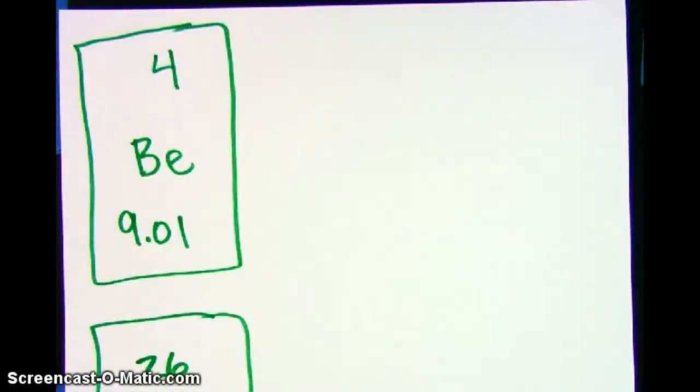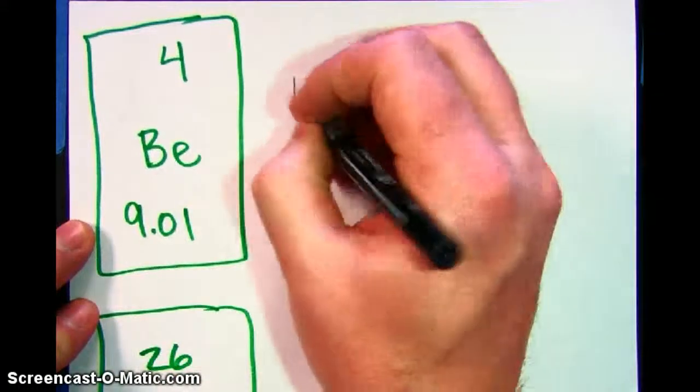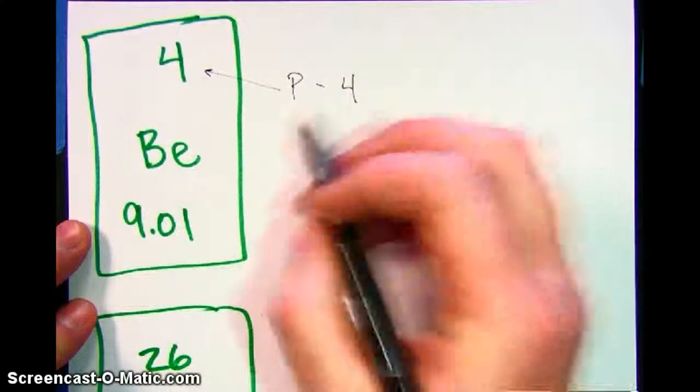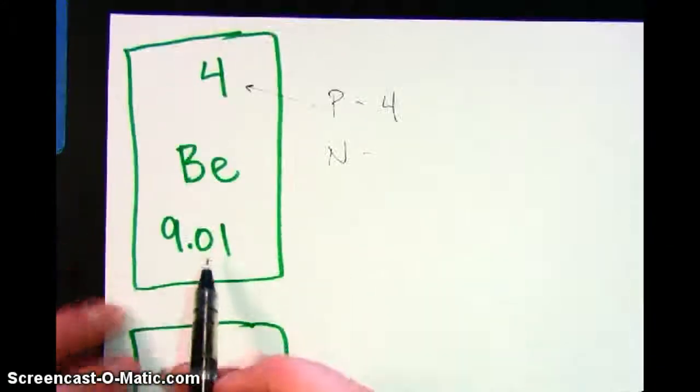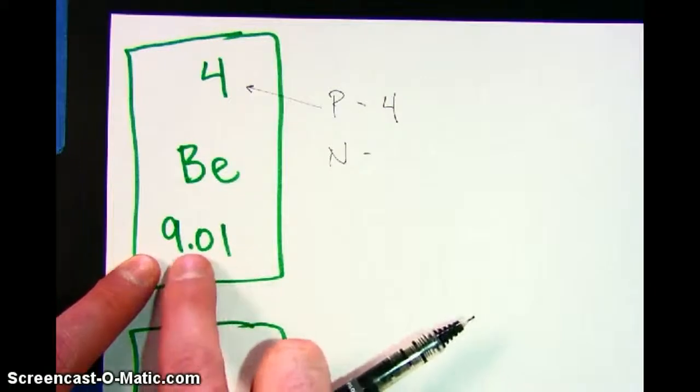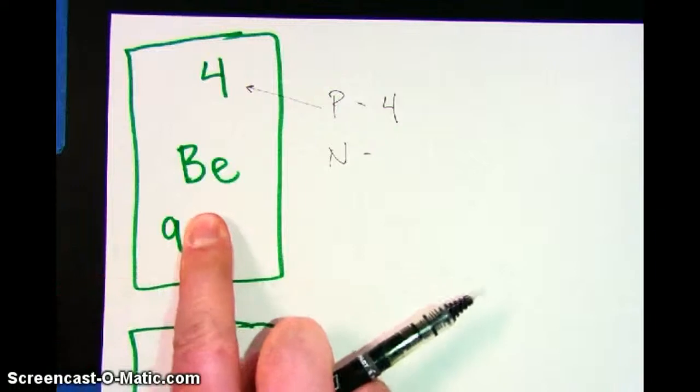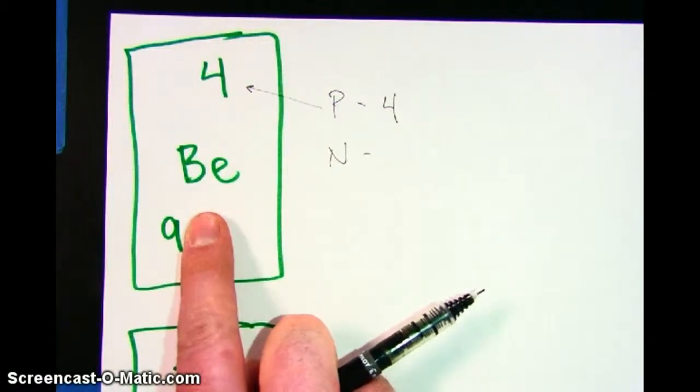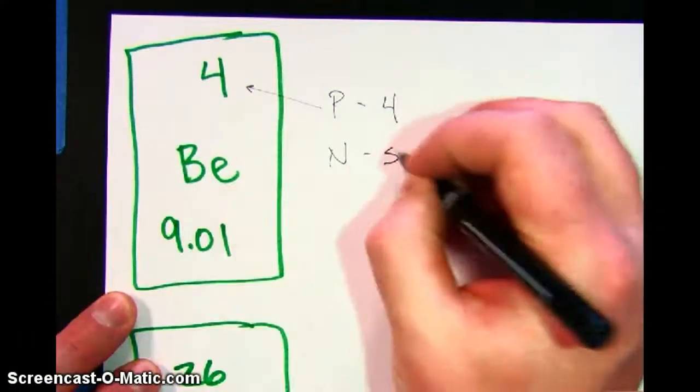So now let's talk about some examples. The first one is Be, that's beryllium from the periodic table. In order to find the protons, we look to the atomic number. We look at four. The neutrons in this example are going to be rounding this atomic mass. Since 0.01 is a really small number, it's less than five, we're going to round down to nine. That means that in the nucleus, on average, beryllium has nine particles total. Since we know that four of those nine are protons, the other five have to be neutrons.